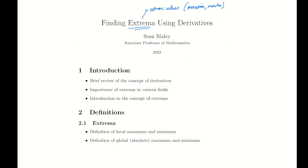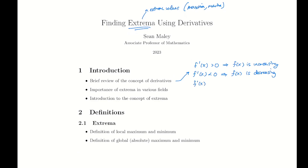A quick framing and review: what do derivatives have to do with extreme values and with functions in general? We know that for a function f, f prime of x being positive implies that the function is increasing. We also know that if f prime is negative, it means the slope of the tangent line is negative, which means f of x is decreasing. And we know that if f prime equals zero, this means that f is flat or has no change. We're just going to collect these ideas in a more organized way.